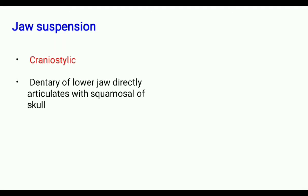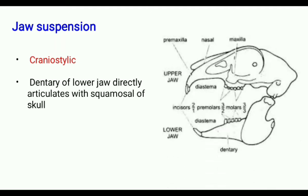In craniostylic jaw suspension, the dentary of the lower jaw directly articulates with the squamosal region of the skull. This type of jaw suspension is called craniostylic jaw suspension.